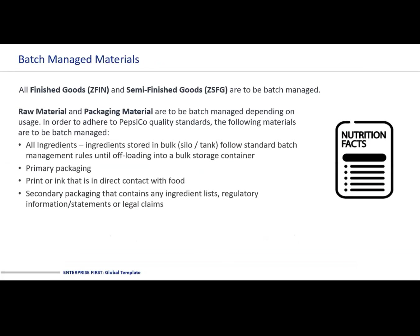What are the materials that are going to be batch managed? All finished goods with the SAP code ZFIN and semi-finished goods ZSFG are to be batch managed. Raw material and packaging material are to be batch managed, depending on usage. All ingredients stored in the bulk silo tank follow standard batch management rules until offloaded into a bulk storage container. Primary packaging — print or ink that is in direct contact with the food — and secondary packaging that contains any ingredients list, regulatory information statements, or legal claims.